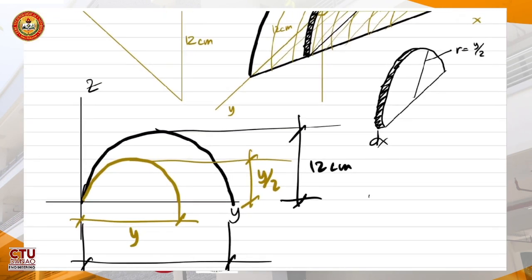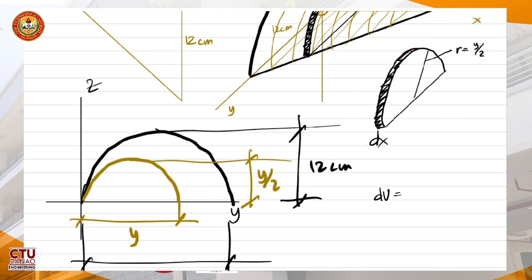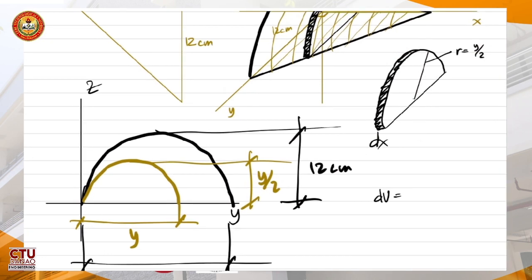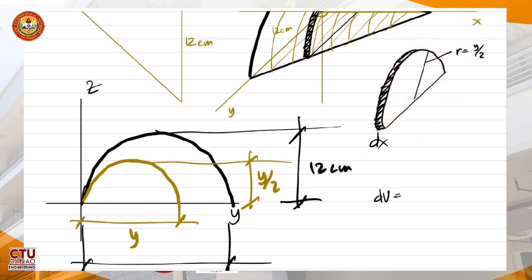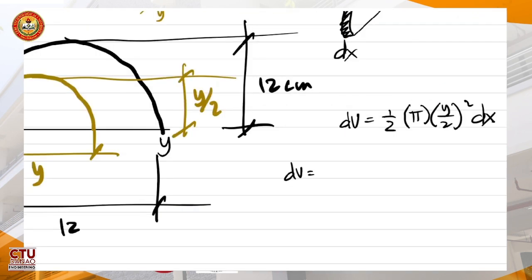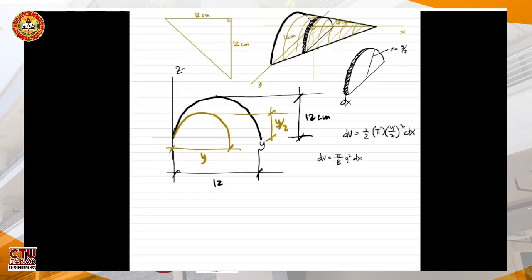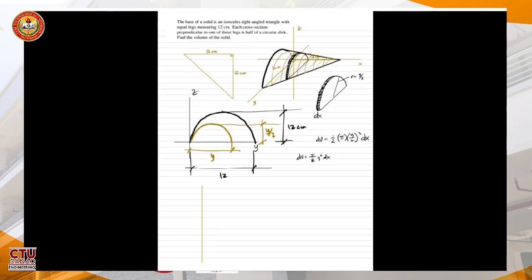How do we solve the differential volume? The differential volume is just the volume of half of a disk — half of the area of the circle with radius y/2 times the thickness. That is one-half π r² times thickness. So the differential volume is π over 8 times y squared dx. We need to substitute y as a function in terms of x. If we look at the figure in the x-y plane, x is along one axis and y is along the other.